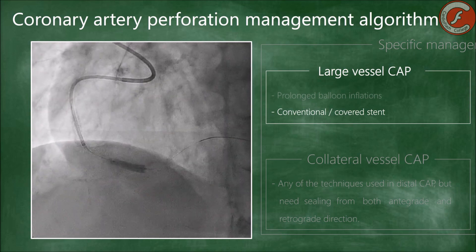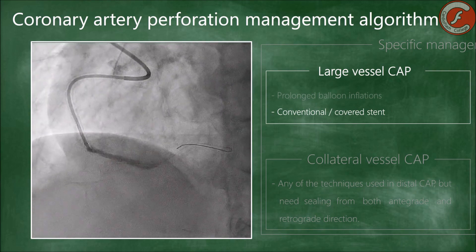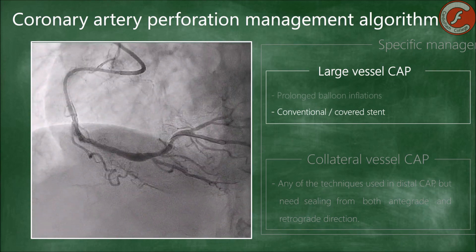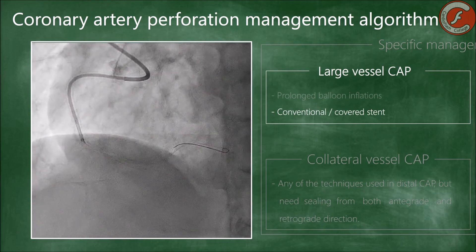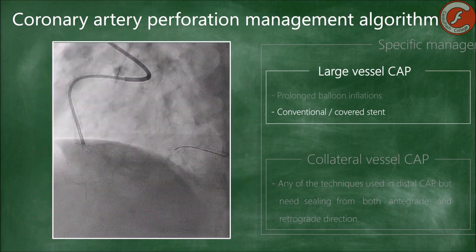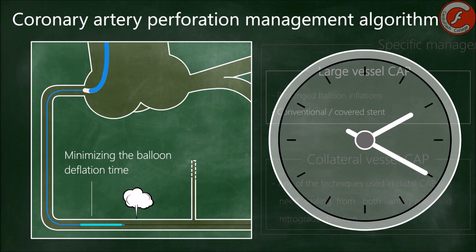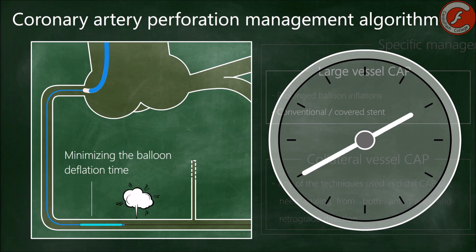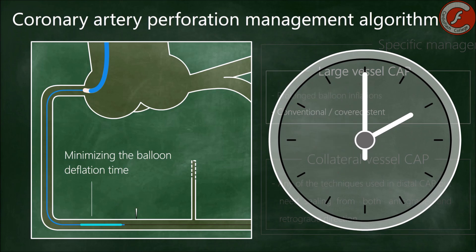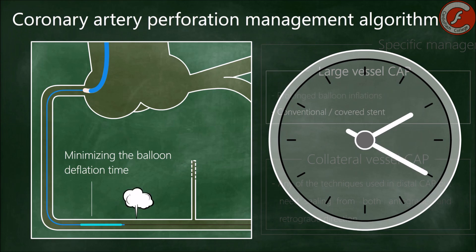The implantation of these devices must be carried out quickly, minimizing the time that elapses from the deflating of the blocking balloon until the covered stent is implanted. Reducing deflation time is crucial to reduce pericardial bleeding and the potential development of cardiac tamponade. There are coronary intervention techniques frequently used in clinical practice to reduce blocking balloon deflation time and with it the bleeding time.